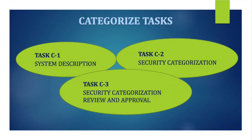Now let's look at the tasks under categorization. There are three tasks. Task number one is system description, meaning the system should be described — tell us what the system does, its definition, characteristics, components, and the information types that are processed, stored, shared, or documented in the system.